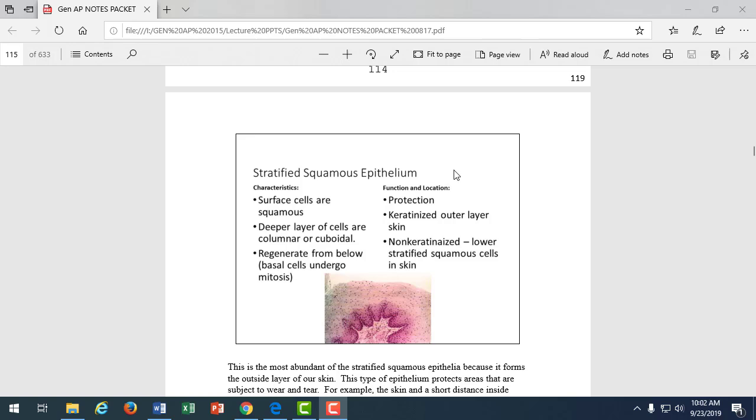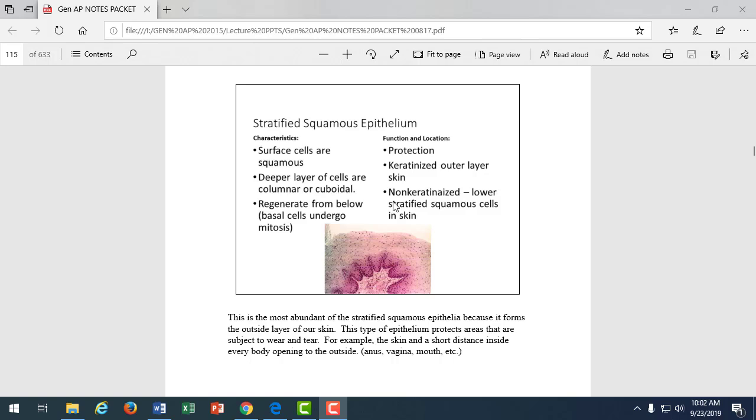Stratified squamous, we would want protection. That's the key function. Many layers allows protection. We find this on the surface of our skin, also inside our mouth. Did you ever burn your mouth eating hot pizza? It heals pretty quickly because of stratified squamous epithelium. When you swallow nachos that are jagged, it doesn't rip up your esophagus because you have stratified squamous epithelium. When bowels move and we have stool passing through the anal canal, that doesn't damage the walls because of stratified squamous epithelium. The vaginal canal, baby passing through, intercourse, all that is stratified squamous epithelium for protection.